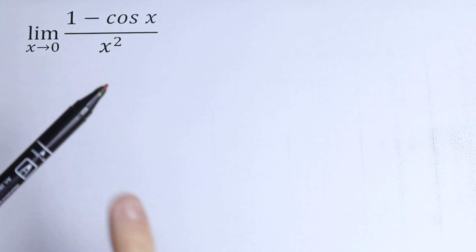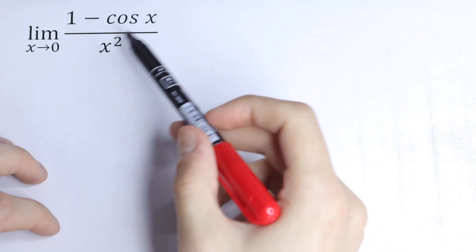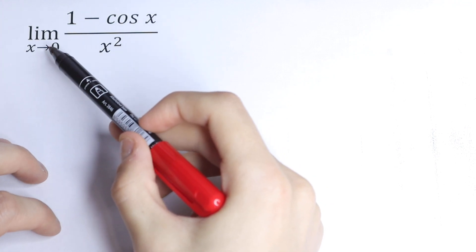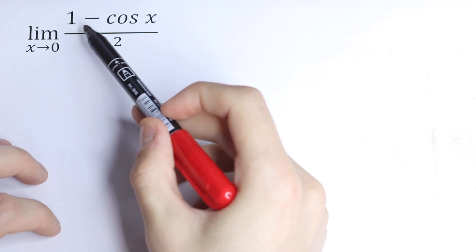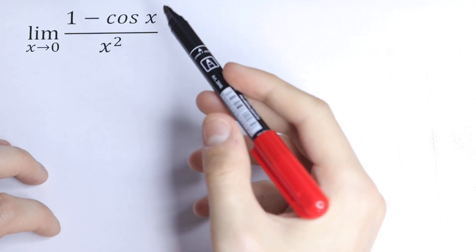Hello everyone, welcome back to Higher Mathematics. Here we have an interesting limit. What is the limit as x approaches 0 of the function (1 - cos x) / x²?